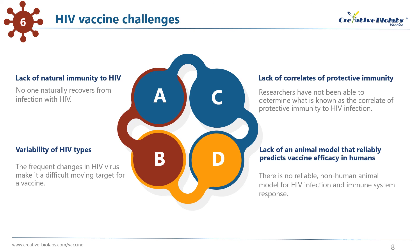Finally, animal models are an important tool in understanding the basic pathway of infection and immune system response in most diseases as well as in vaccine research. However, there is no reliable non-human animal model for HIV infection and immune system response. HIV vaccine tests in animals have not yet yielded accurate predictions of how the vaccines will work in humans. Researchers continue to perform trials testing vaccines against simian immunodeficiency virus, the monkey virus related to HIV, and against genetically engineered hybrids of SIV and HIV in hopes of using similar approaches against HIV.